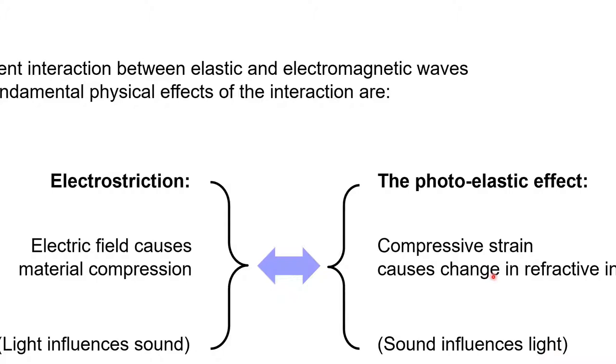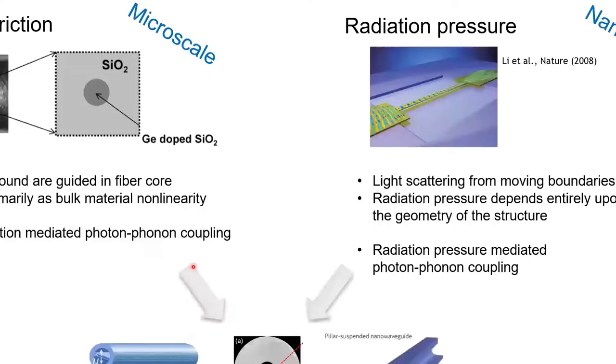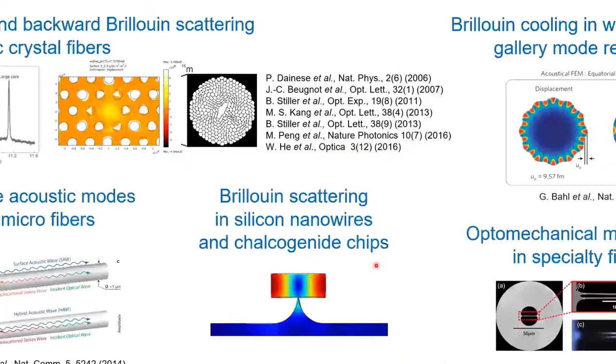In the stimulated Brillouin scattering regime, there are two effects that are important. One is that the sound waves influence the light waves—the compressive strain causes a change in refractive index. On the other hand, electrostriction means that the light influences the sound because the electric field causes material compression. This is important for bulk materials and standard optical fibers because here the sound waves propagate far away from boundaries. If you get to the nanoscale or microscale structures, then radiation pressure is also important. Here the light is scattered from moving boundaries, and this radiation pressure depends entirely on the geometry of the fiber. We have both photon-phonon coupling based on electrostriction and radiation pressure.